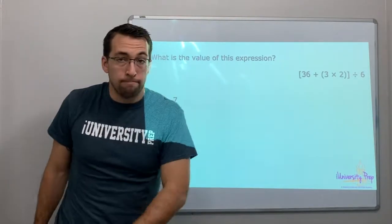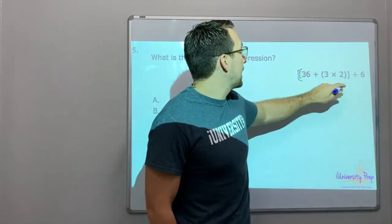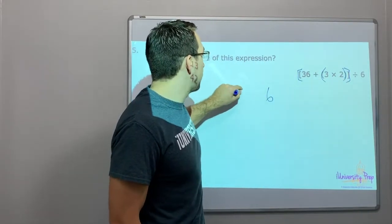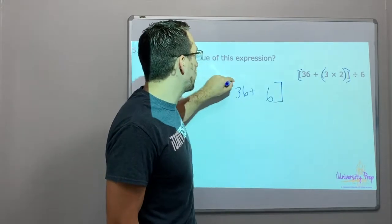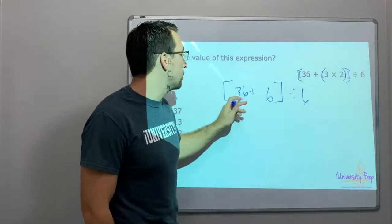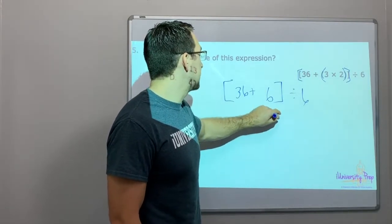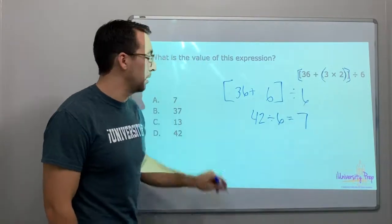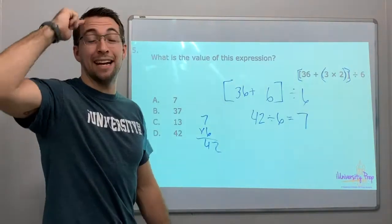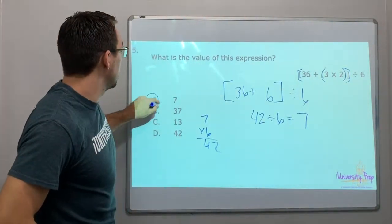What is the value of this expression? Let's solve it. This is a double grouping — a bracket on the outside and parentheses on the inside. Three times two is six, so we have thirty-six plus six inside our brackets, divided by six. Do the groupings first: thirty-six plus six is forty-two. Forty-two divided by six equals seven, because seven times six is forty-two. You have to know your times tables — practice them.